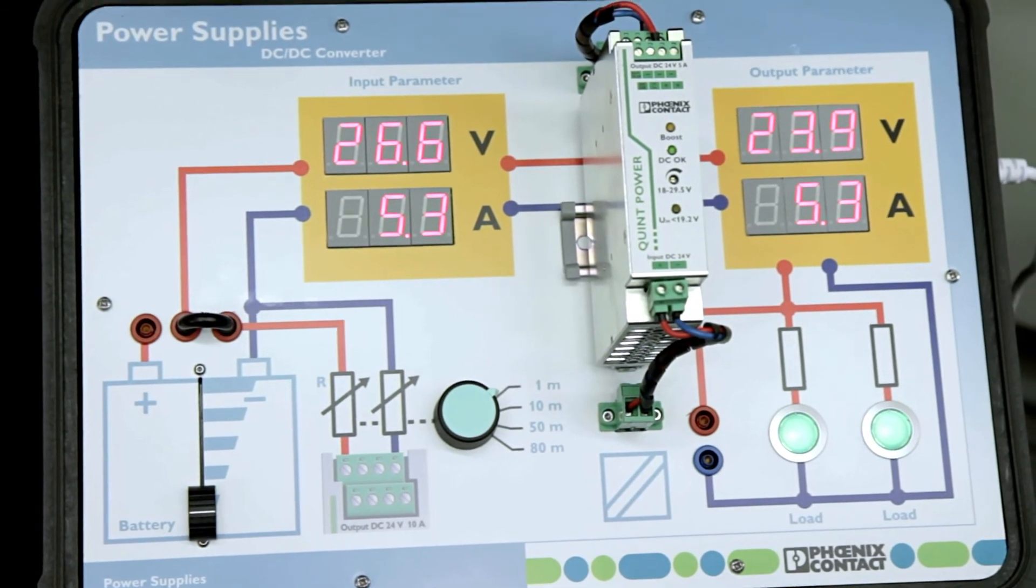Imagine you have your power coming into your motor on your output side and a PLC on the input side. If there is a short on the motor, it loads down the power supply and demands a high amount of current. During this short, you lose all power to your PLC.